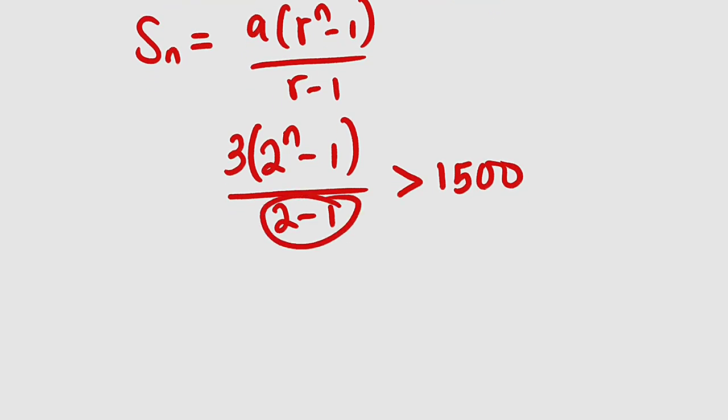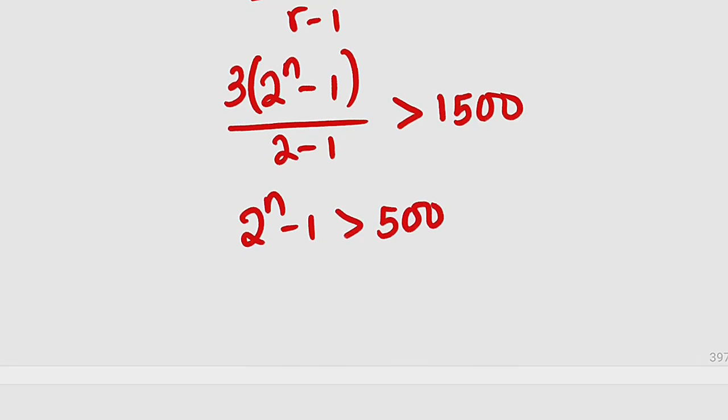Okay, 2 minus 1 is 1, so we have no problem with that. We can divide both sides by 3, so we have 2 to the power of n minus 1 is greater than 500, because 1500 divided by 3 is 500. Then we can take 1 to the other side. We have 2 to the power of n greater than 501, because this will become positive: 500 plus 1 is 501.